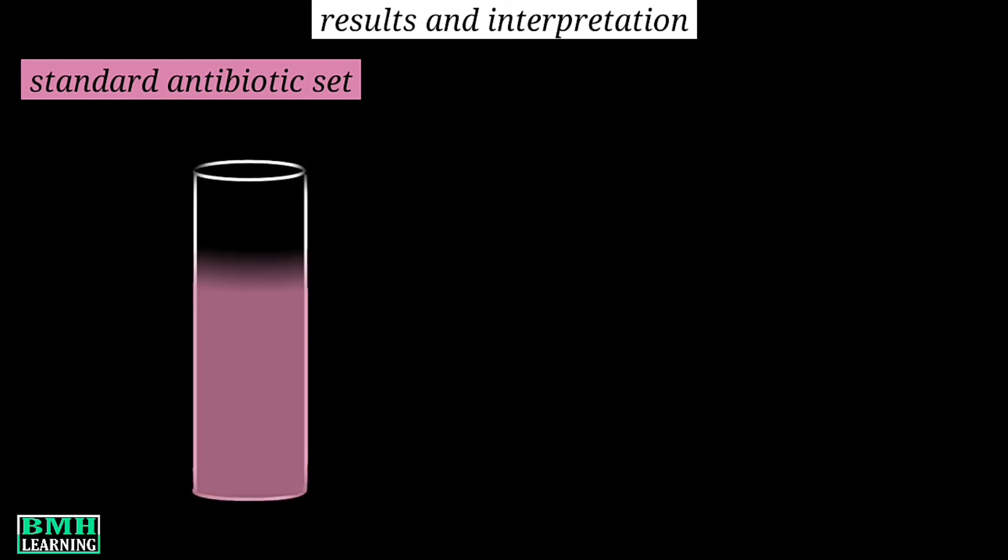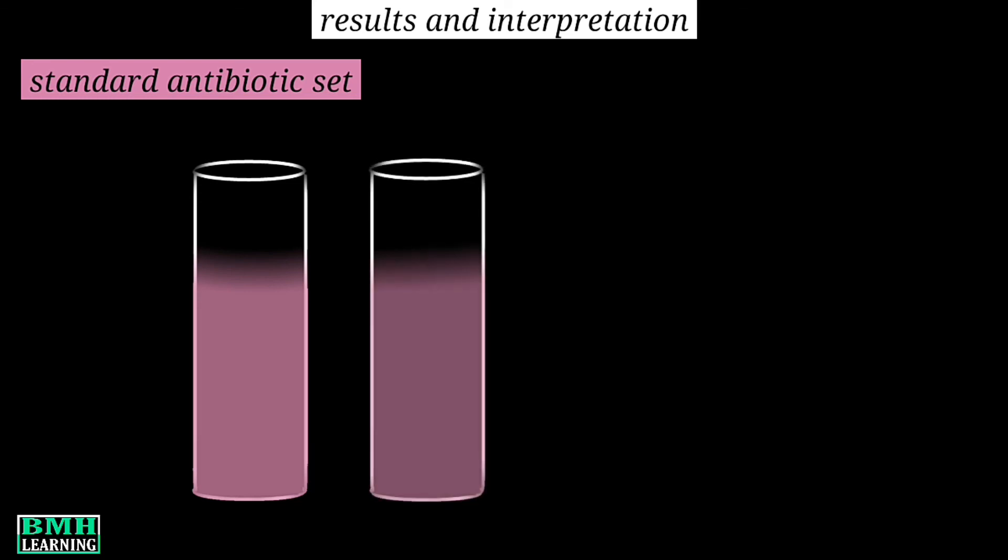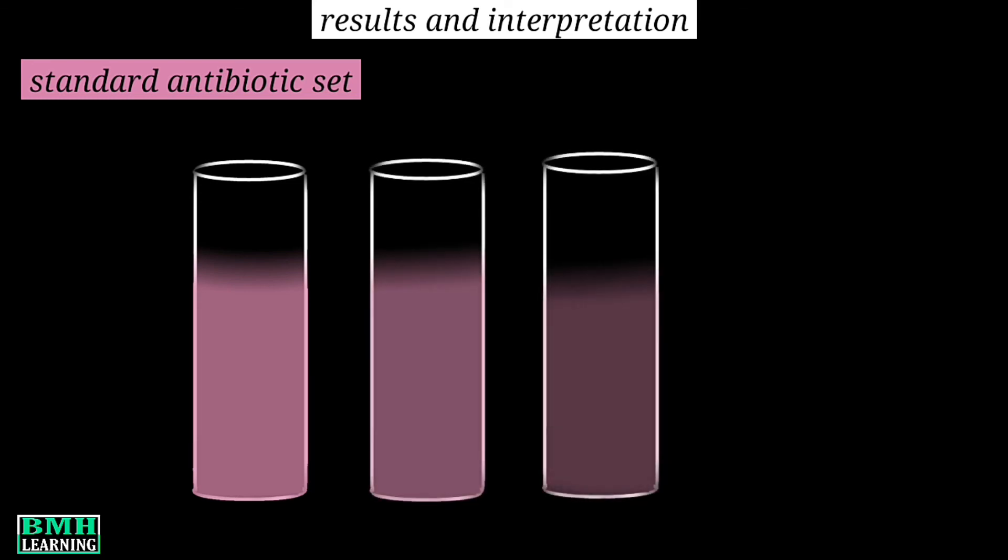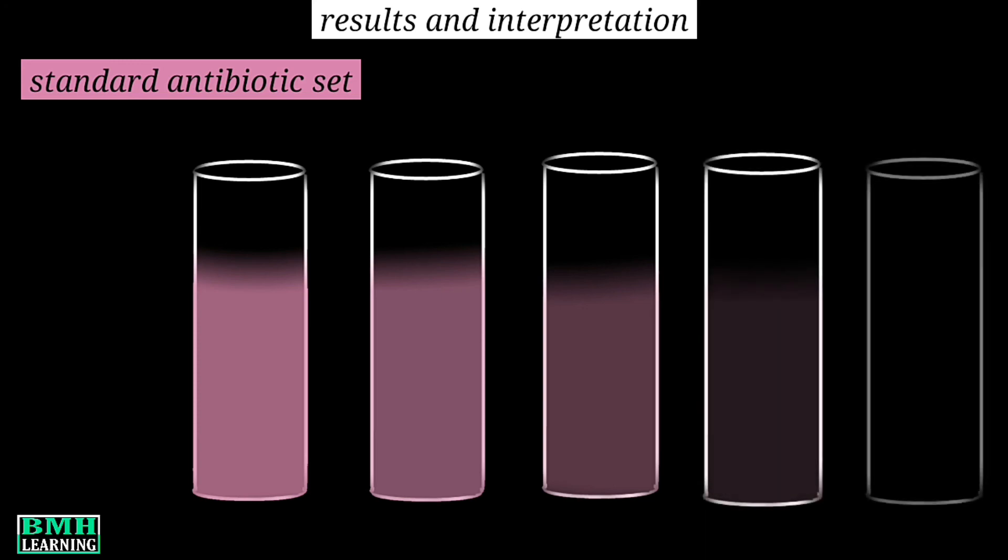In case of standard antibiotic, the turbidity is like: the first tube is most turbid, the second one is a bit less, the third one is little more less, and the trend follows with the last one having lowest turbidity.